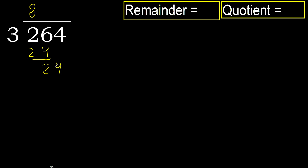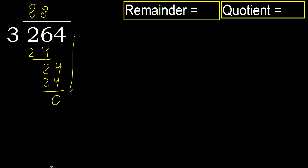Bring down 4, giving 24. 3 multiplied by 8 is 24, which is not greater. So 24 minus 24 is 0. Next — there is no more number, therefore finish. The answer is 88.